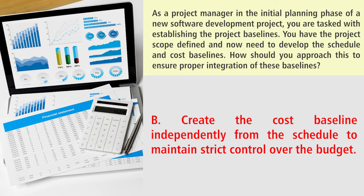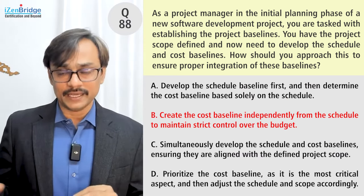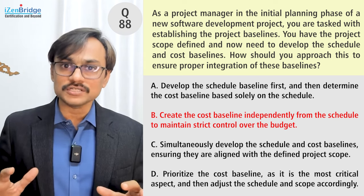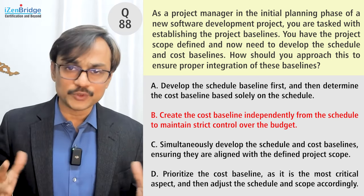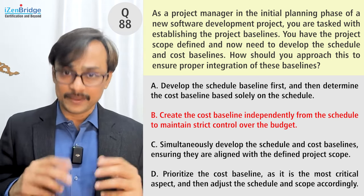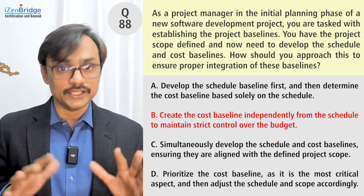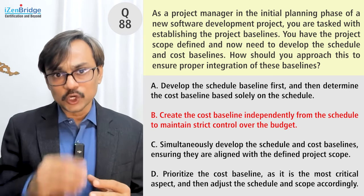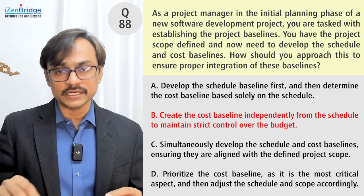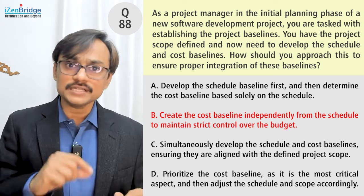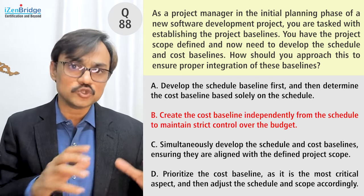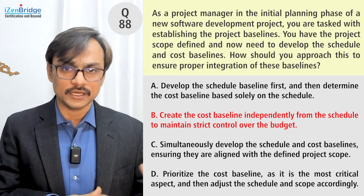Option B: create the cost baseline independently from the schedule to maintain strict control over the budget. When we talk about baselining, it's not about taking a rough order of magnitude estimate or a parametric estimate in general. The question clearly shows the scope is already defined.